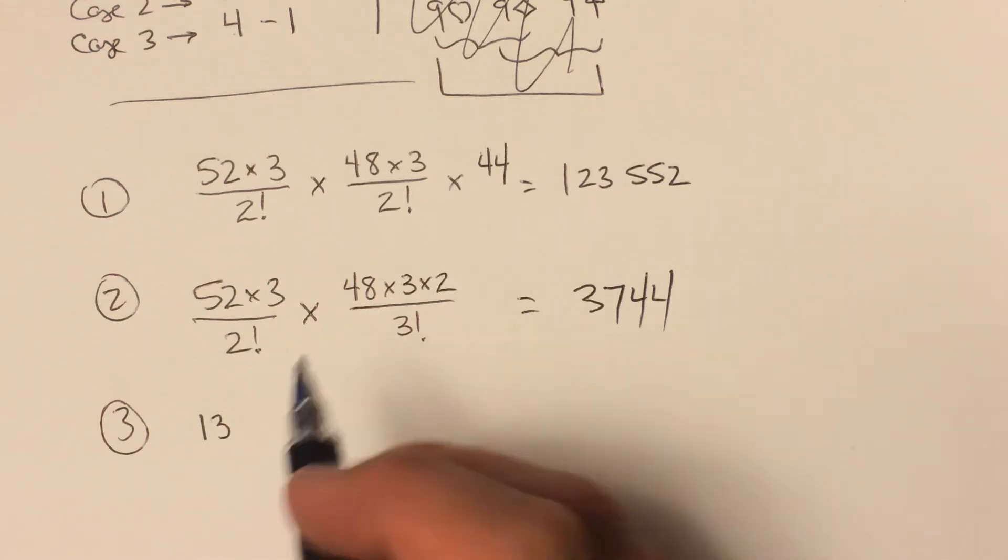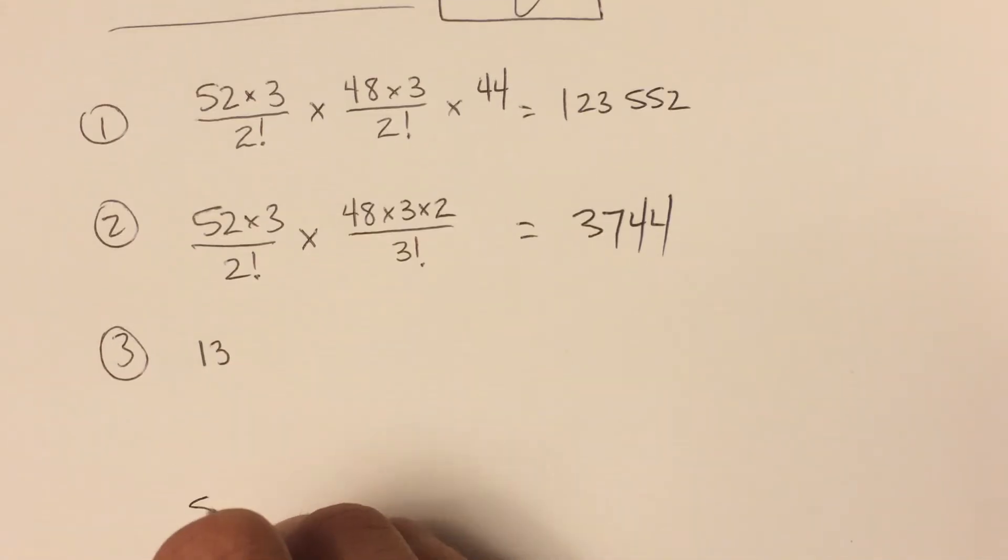We'd end up with 13. Let me just show you that really fast: 52 times 3 times 2 times 1 chooses like a seven and then the other seven, the other seven, the other seven.